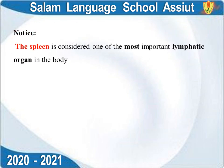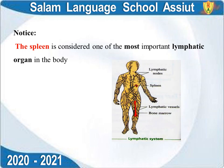The spleen is considered one of the most important lymphatic organs in the body. The lymphatic system consists of lymphatic vessels, lymphatic nodes distributed along those vessels, and the spleen as its most important organ. This concludes chapter 2.